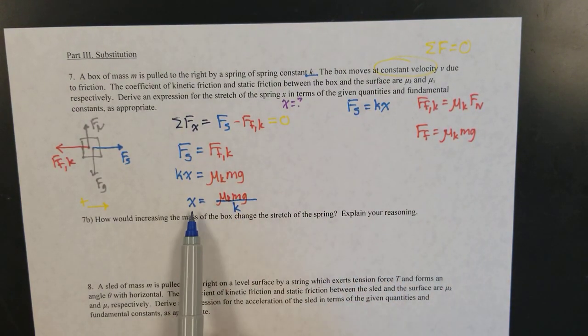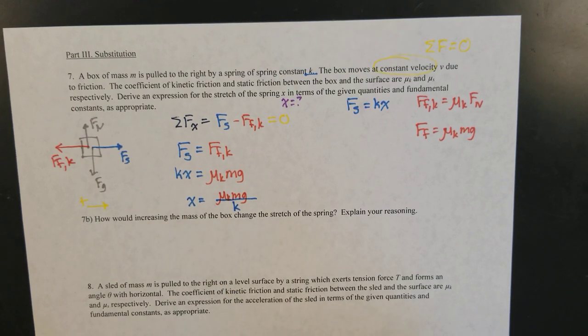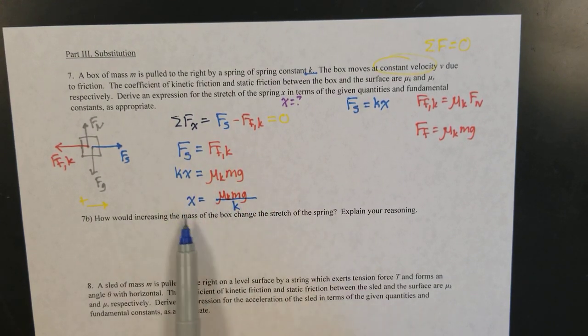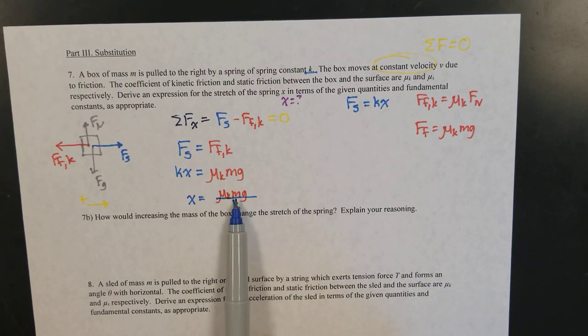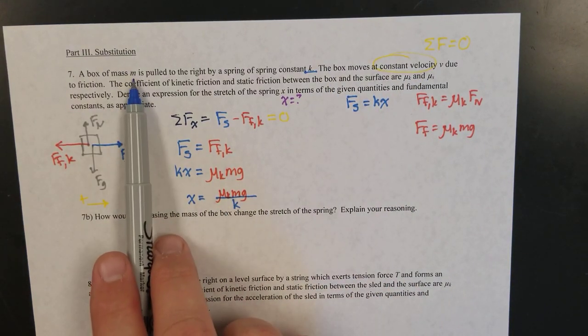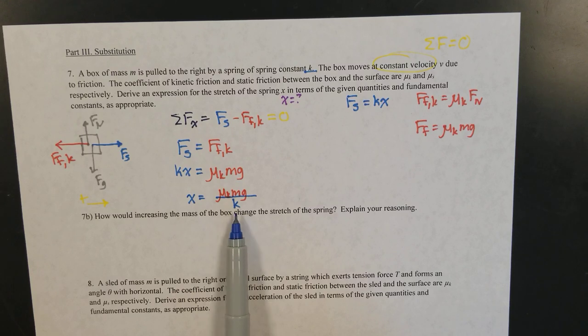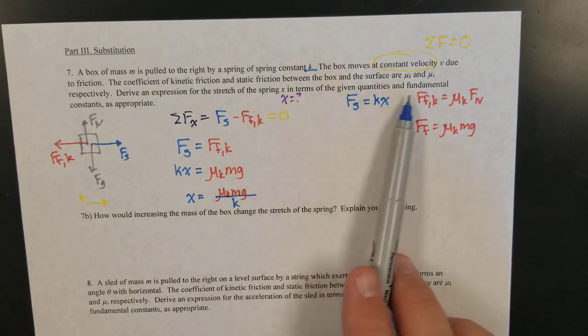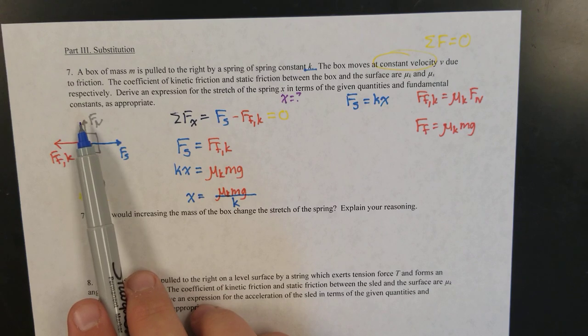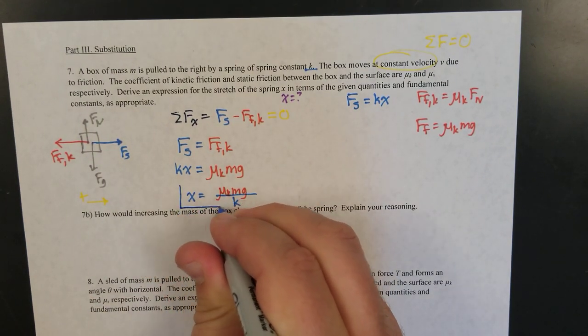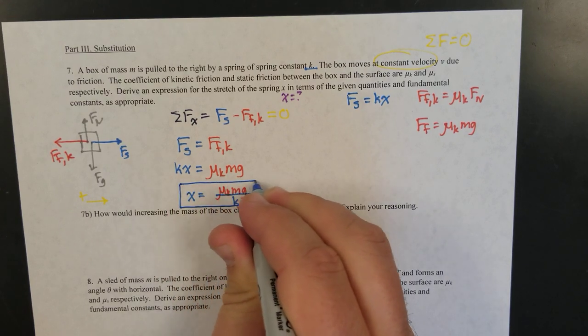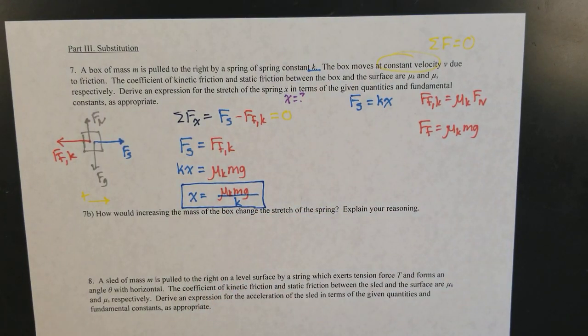Okay, so X is what I'm looking for. X is isolated. Let's do a quick check and make sure that all these things are things I'm given. Mu K, I'm given that. Mass. I have the mass of this box. I have K, the spring constant, and G would qualify as a fundamental or physical constant. So, everything that's in my expression right now are things that I know in the problem, and so I can do that. That's my answer.